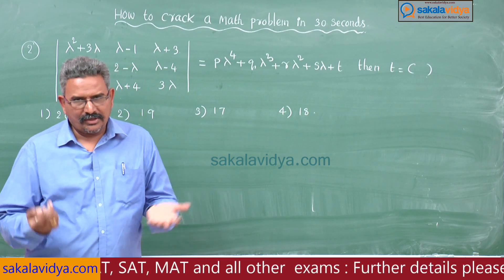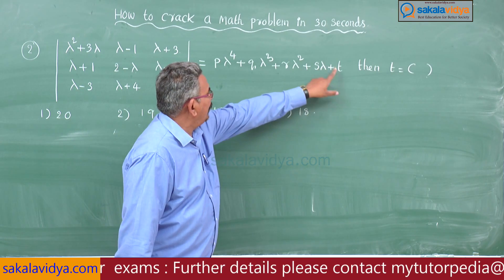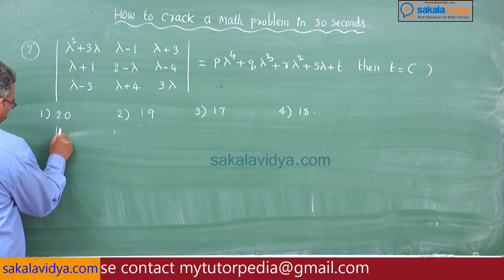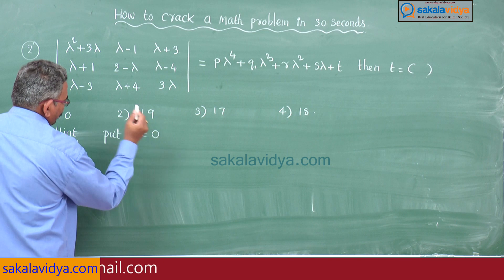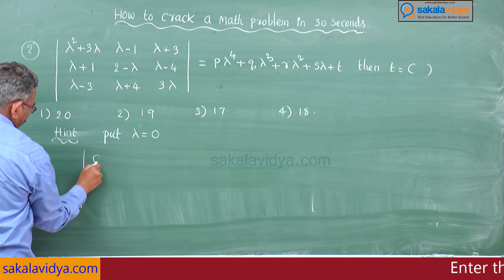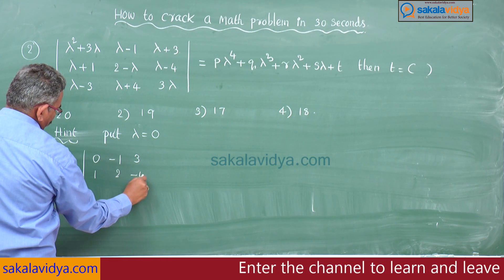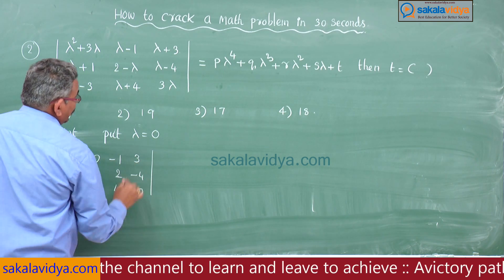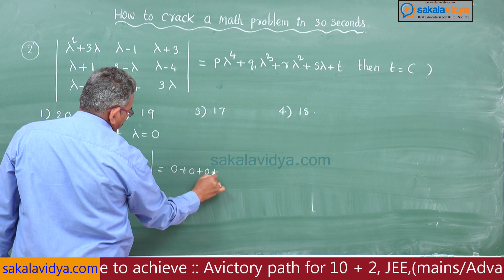Simple technique: put lambda equal to 0. If you put lambda equal to 0, every lambda term becomes 0 and we directly get t. So put lambda equal to 0. The determinant becomes: data of 0, −1, 3, 1, 2, −4, −3, 4, 0, which equals 0 + 0 + 0 + 0 + t.